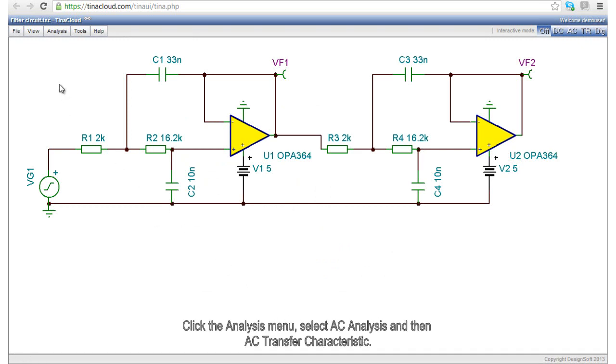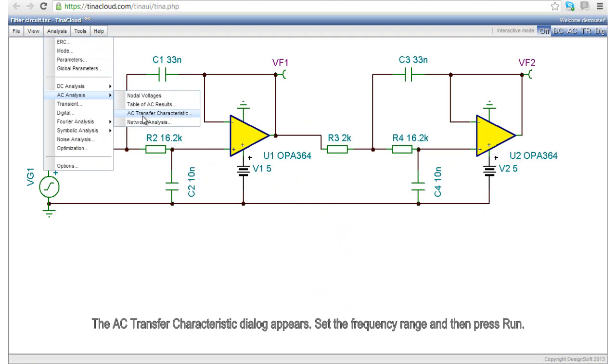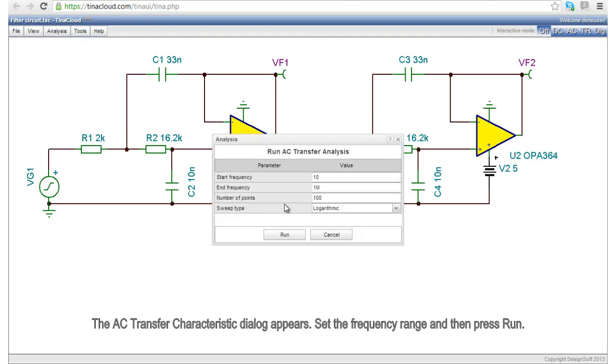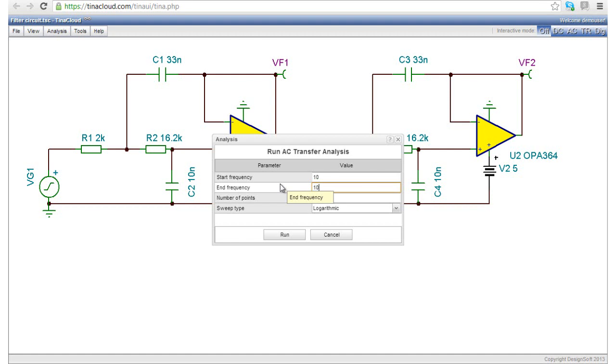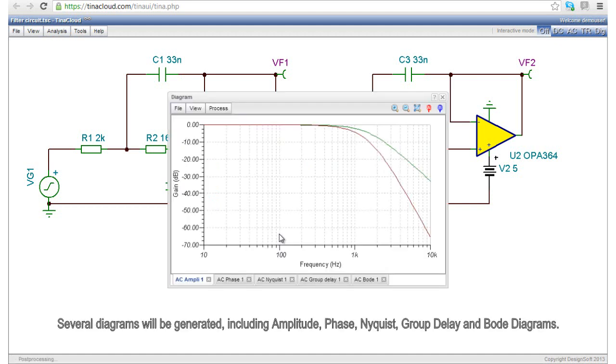Click the Analysis menu. Select AC Analysis and then AC Transfer Characteristic. The AC Transfer Characteristic dialog appears. Set the frequency range and then press Run. Several diagrams will be generated,